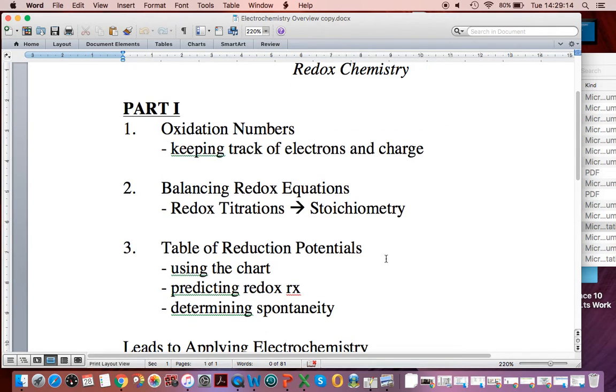You're going to learn how to use that table of reduction potentials that's in your set of sheets, and we're going to learn how to predict redox reactions. If I give you a bunch of chemicals, you'll be able to pull out what's the most likely reaction, and you'll be able to determine if the reaction should happen or not.